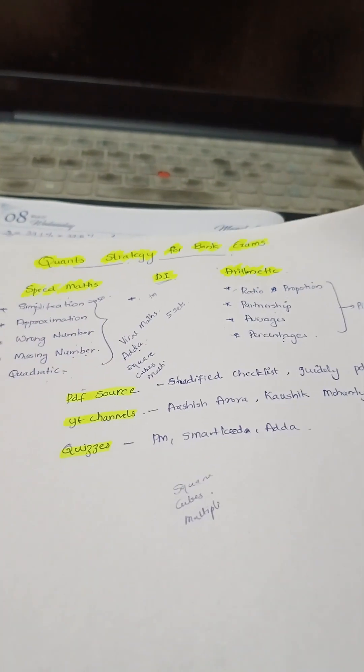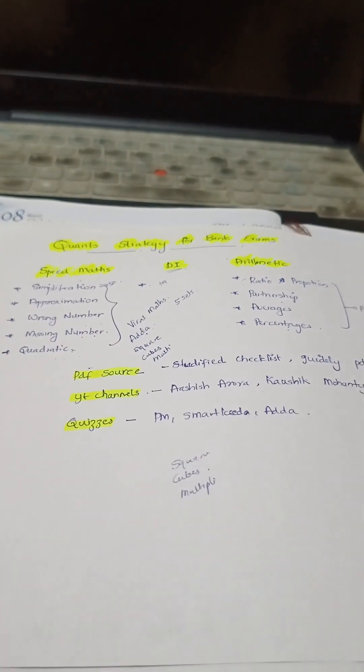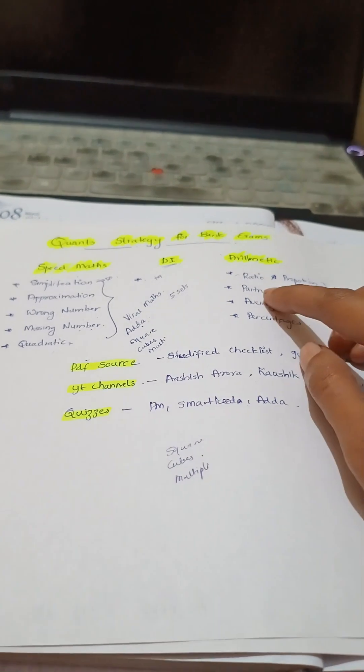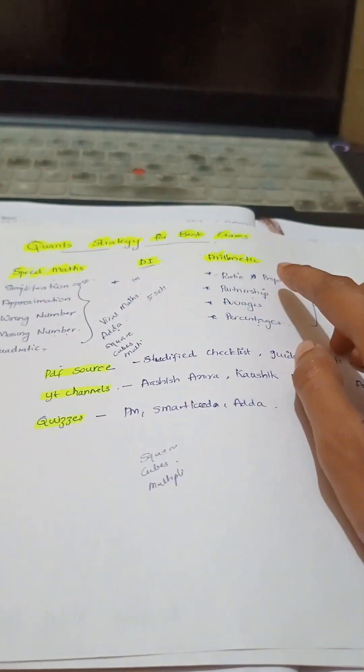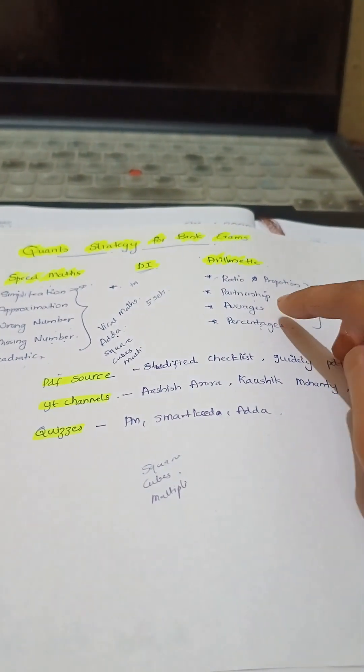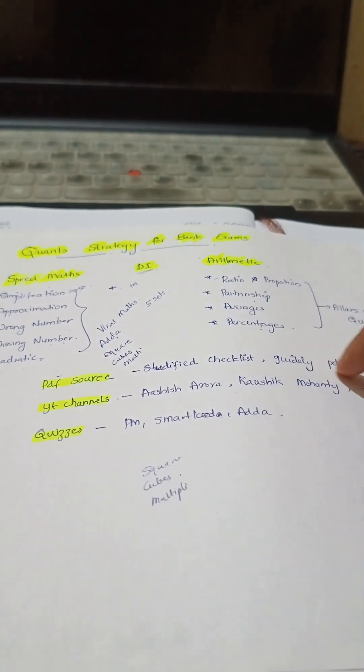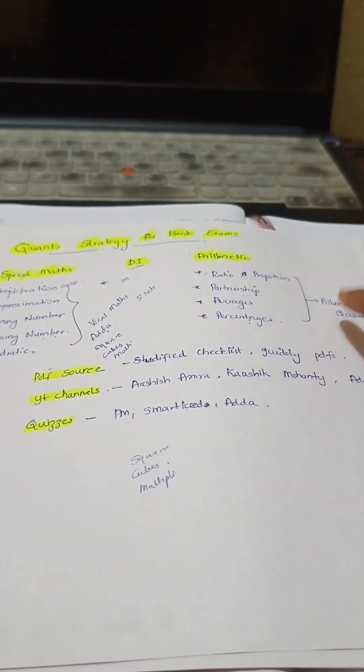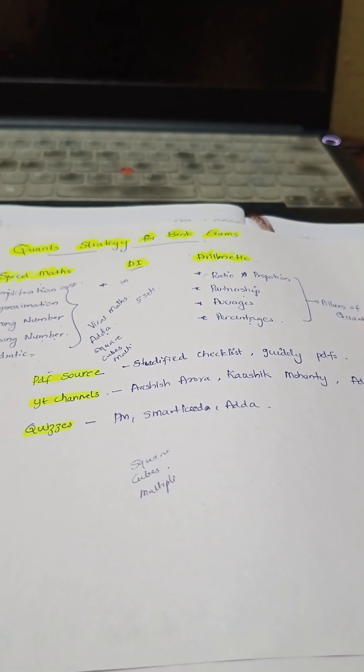Then we were talking about arithmetic. Topics like ratio and proportion, partnership, averages, and percentages — these are all the pillars of quants.